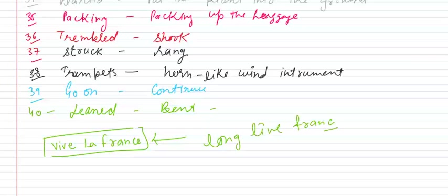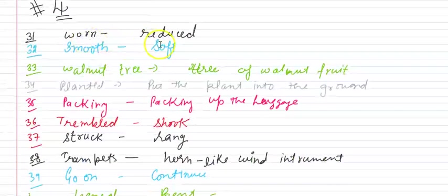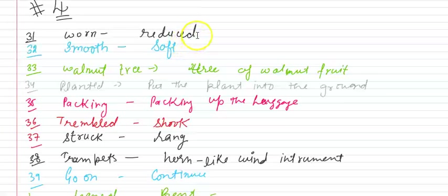Thik hai. I hope ki aap ko achhe se yeh samajh aa gaye ho, words. To ek baar revise kar lete hain words ko. First is worn. Worn means reduce, reduce means burkisa hua. Jaise worn cloth bol sakte hain. Smooth means soft. Walnut tree, walnut tree is akrot ka tree. Planted means put the plant into the ground, plant ko ground pe lagana, zameen mein lagana. Packing, packing up the luggage.